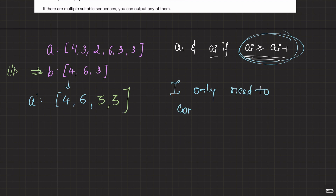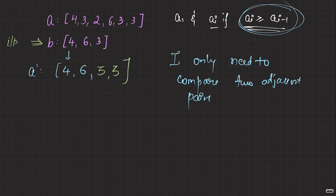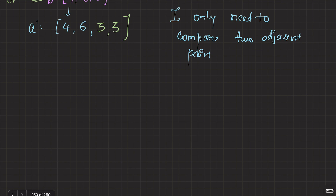The main idea is: we only need to compare 2 adjacent pairs. That's the main idea here. Let me take a bigger example to make it clearer. Let's say B is given as [4, 6, 7, 5, 3, 9]. The first element anyway has to be the same — it will be copied as is.